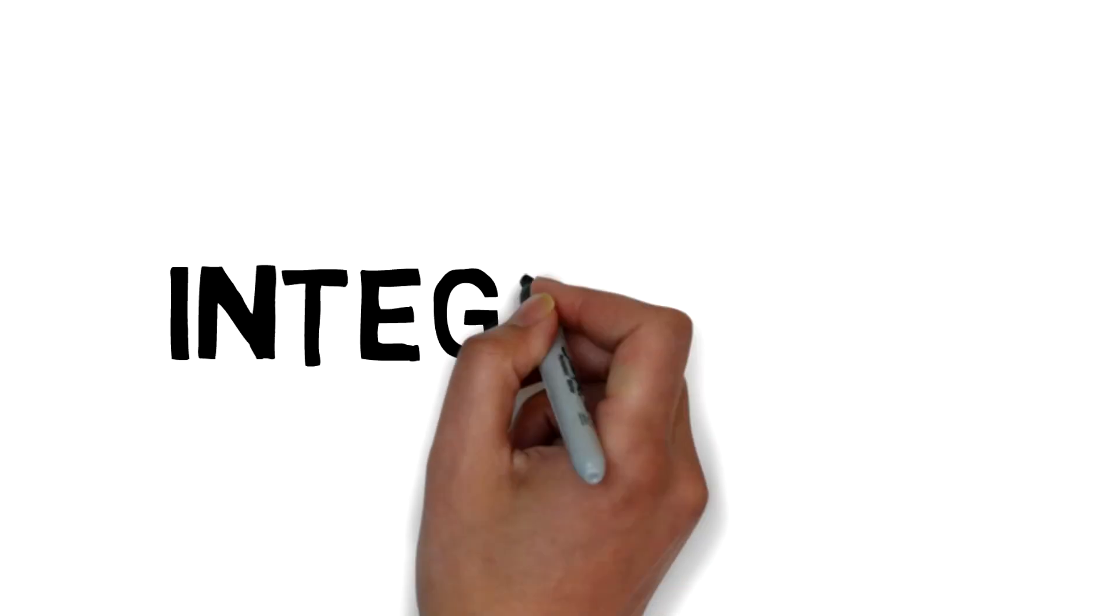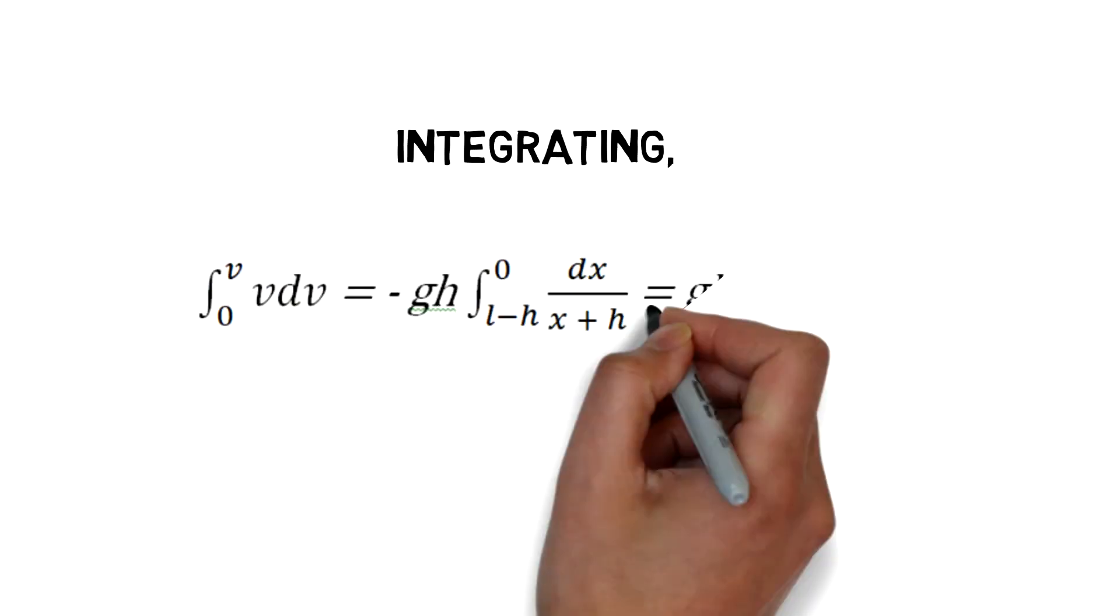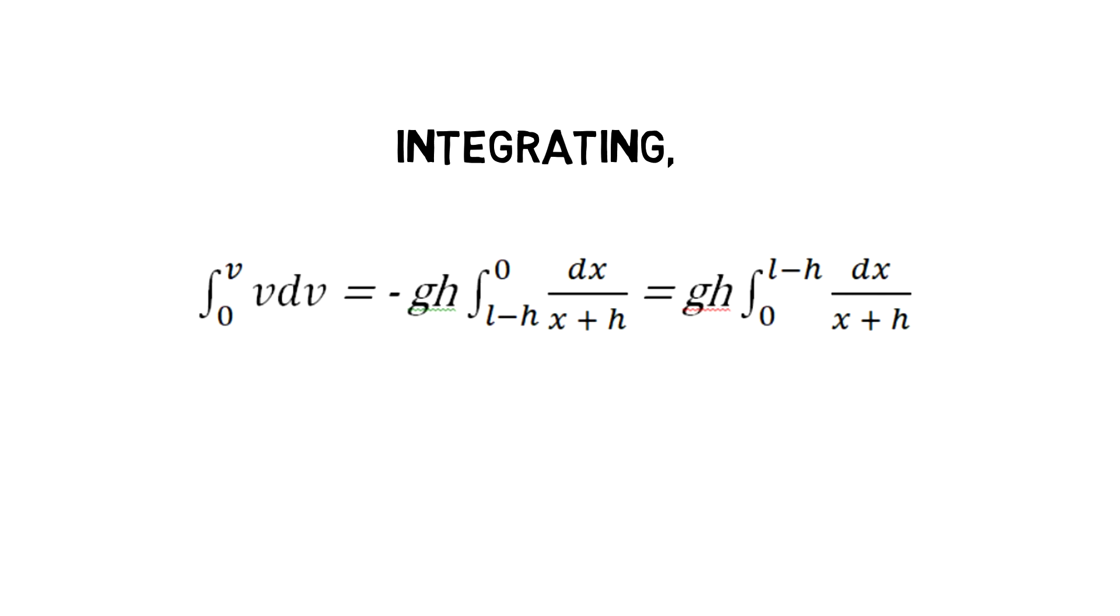Now integrating both sides we get integral from 0 to v of v dv = -gh integral from l-h to 0 of dx/(x+h), which is equal to gh multiplied with integral from 0 to h of dx/(x+h).